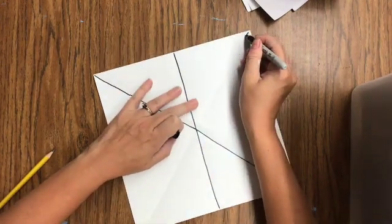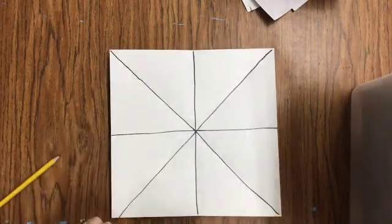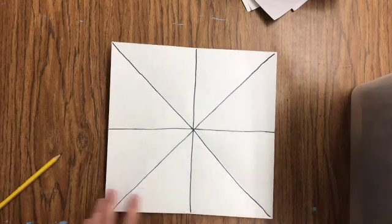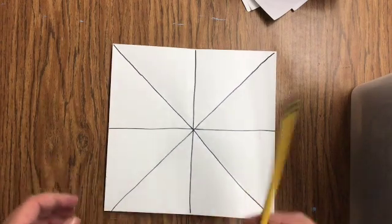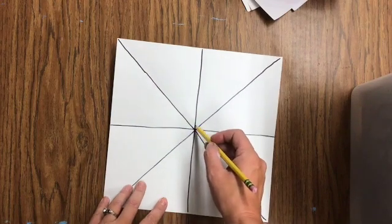And then I'm going to go and get the rest of my lines. One more going across. So your paper should look like this when you're finished. The next thing we're going to do is take a pencil to make our spiral in the middle because the spiral you might mess up.